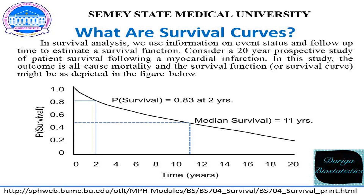At 2 years, the probability of survival is approximately 0.83 or 83%. At 10 years, the probability of survival is approximately 0.85 or 85%. The median survival is approximately 11 years. A flat survival curve, i.e., one that stays close to 1, suggests very good survival, whereas a survival curve that drops sharply towards 0 suggests poorer survival.